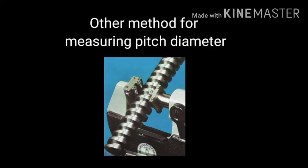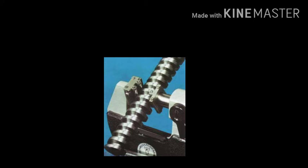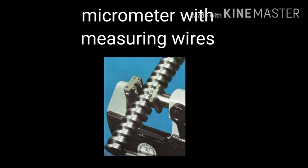If you don't need to change the diameter of the thread, there is a 3-wire method and a 2-wire method. If you choose the correct wire, you can check the measurement with the wire using a standard micrometer.